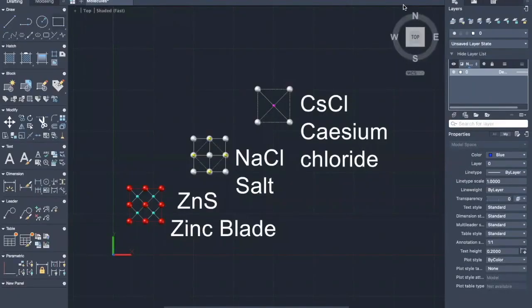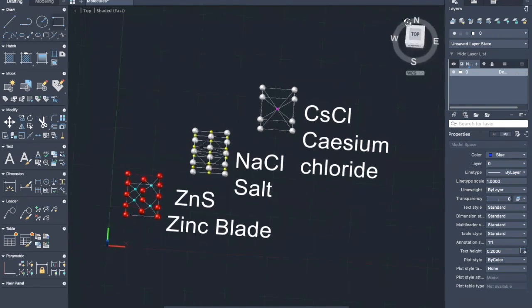Here we have examples of three different crystal structures: zinc blende with a coordination of 4, salt with a coordination of 6, and CsCl with a coordination of 8. In zinc blende structure, the ions are arranged in cubic close packaging manner.